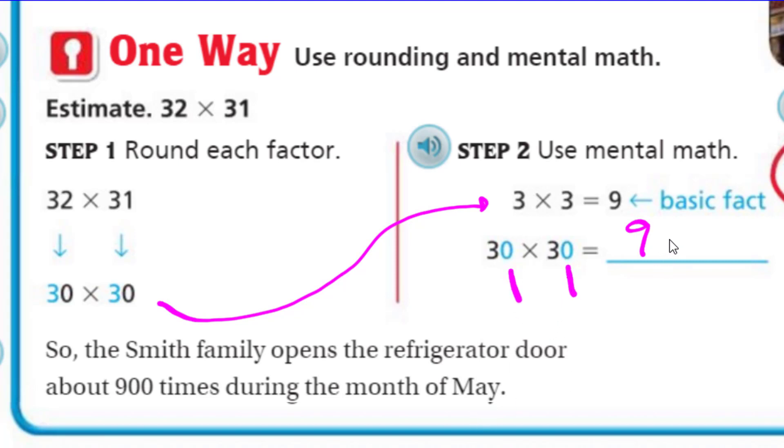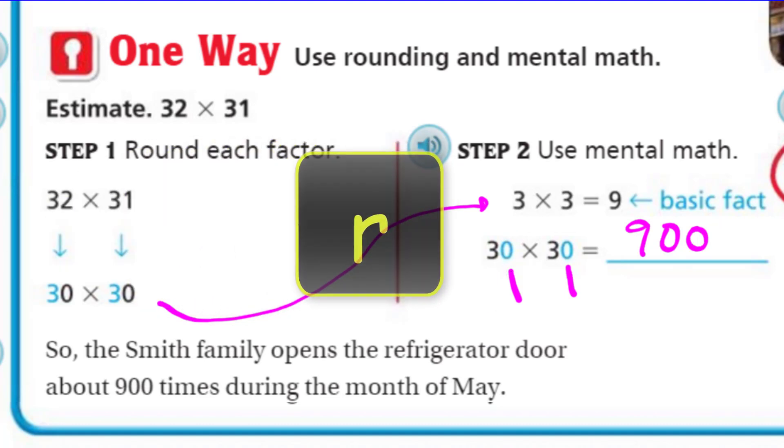We know the basic fact is 3 times 3 equals 9. So, if we're doing 30 times 30 and we can look at that basic fact, that's pretty important. When we put our zeros on, it makes it a little bit easier. We have 1 power of 10, 2 powers of 10. It's just because there's two zeros. So, the Smith family opens the refrigerator door about 900 times during the month of May.